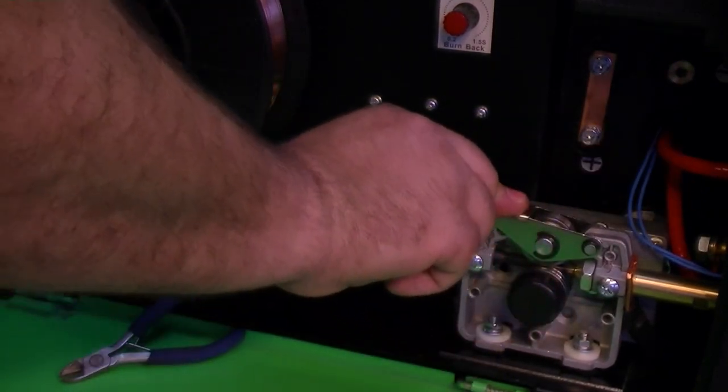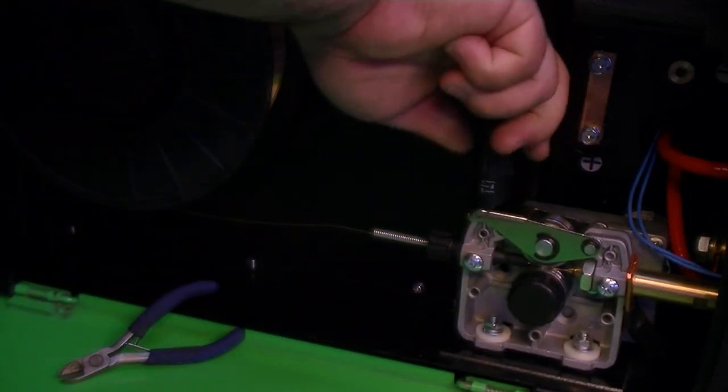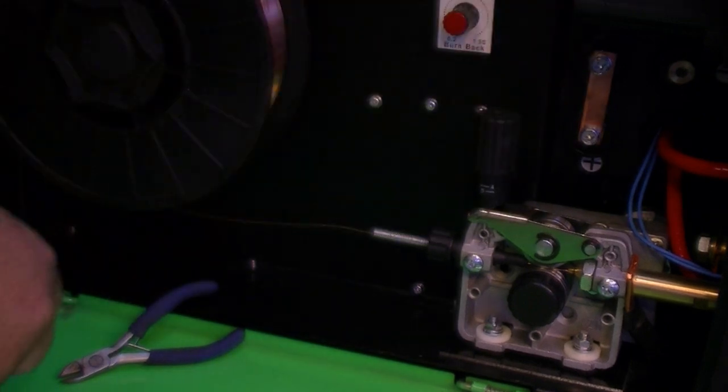Then lower the top drive roller onto the bottom making sure the wire is still in the groove. Raise the spring loaded tensioner and re-tighten the tension according to the amount required. Typically more tension is required for steel and stainless than for aluminum.